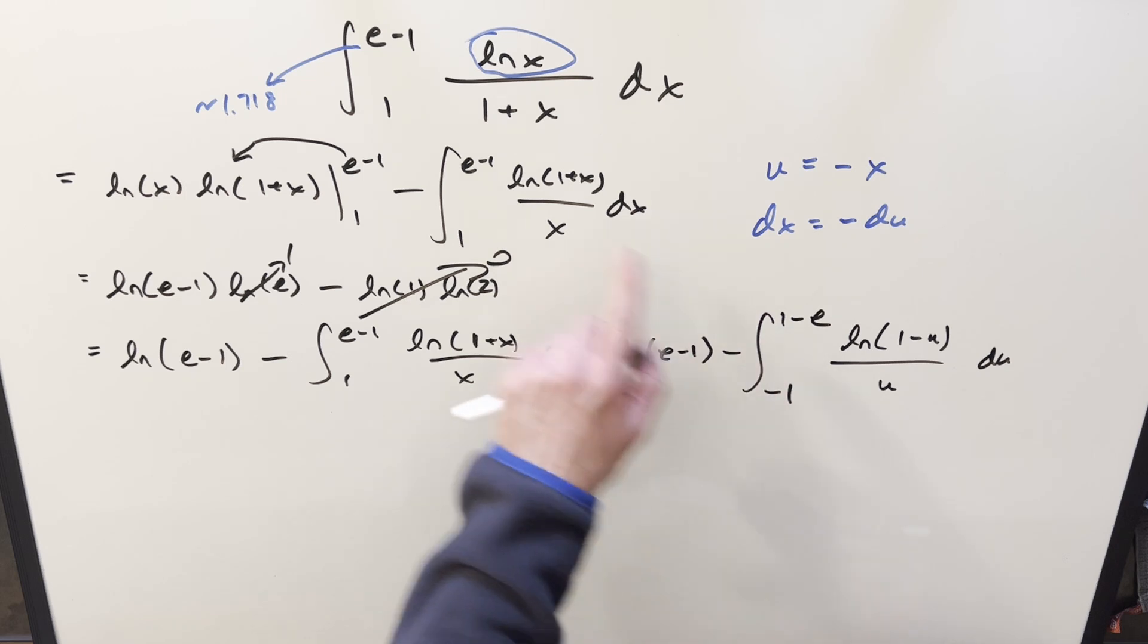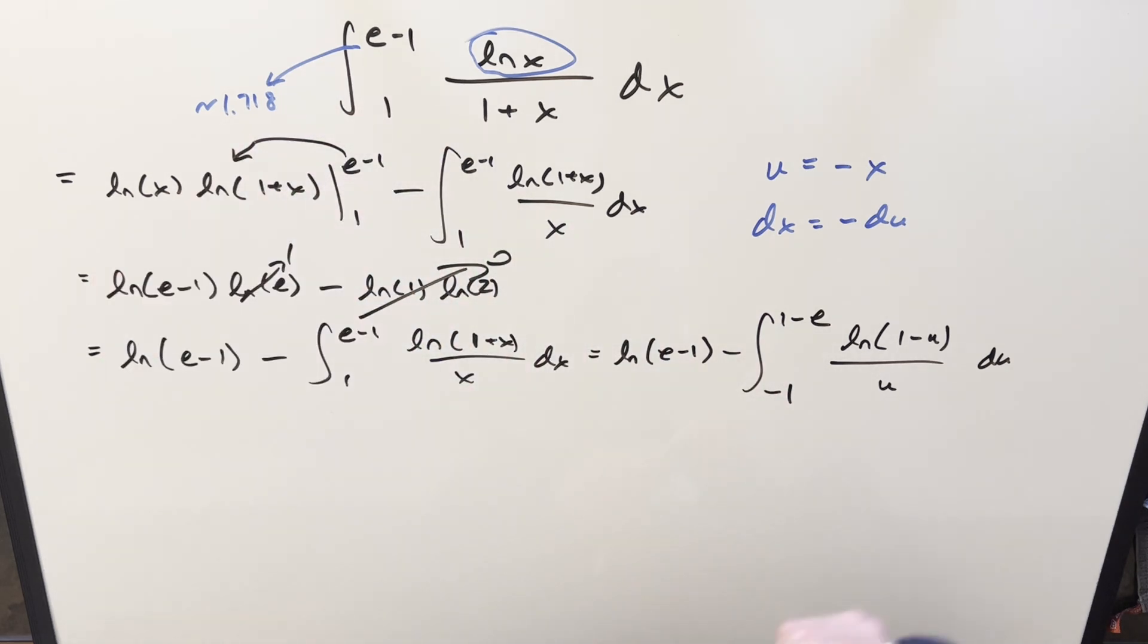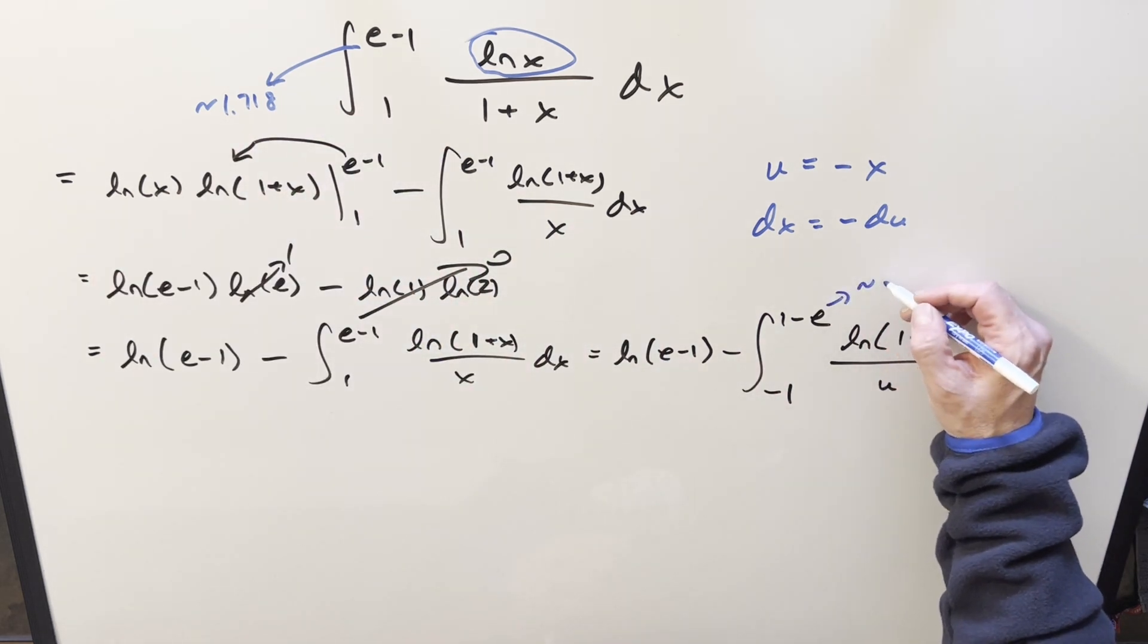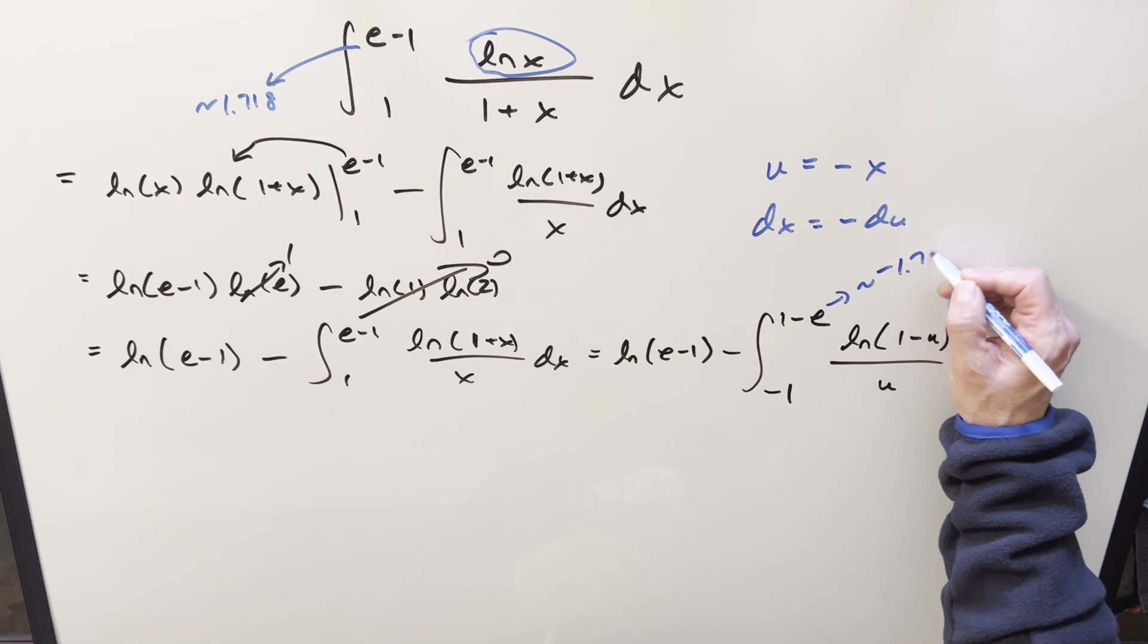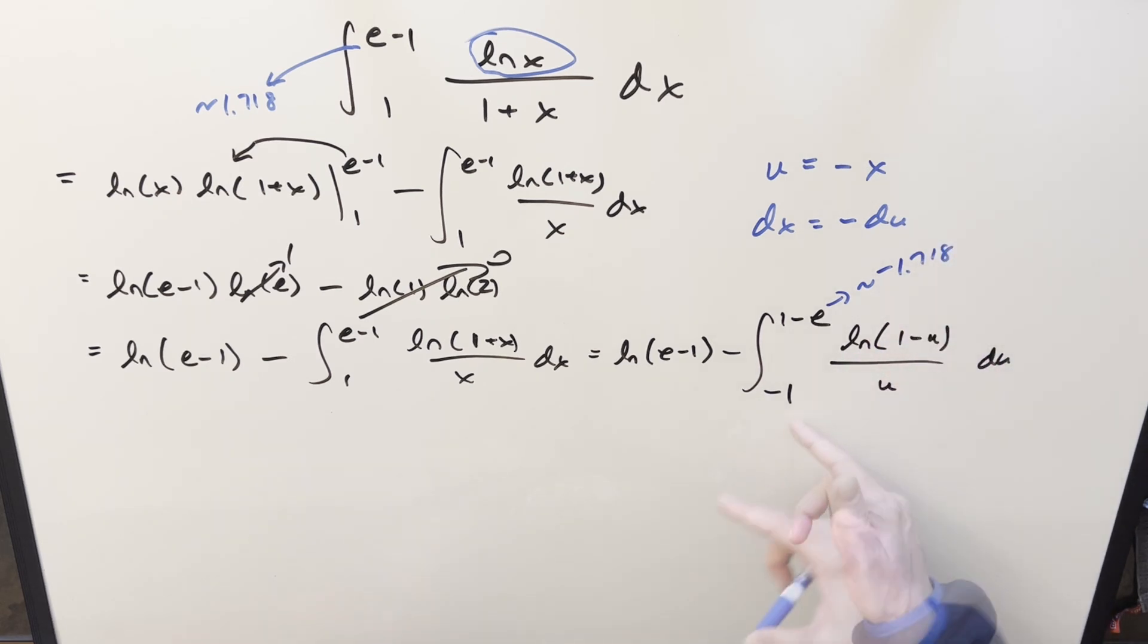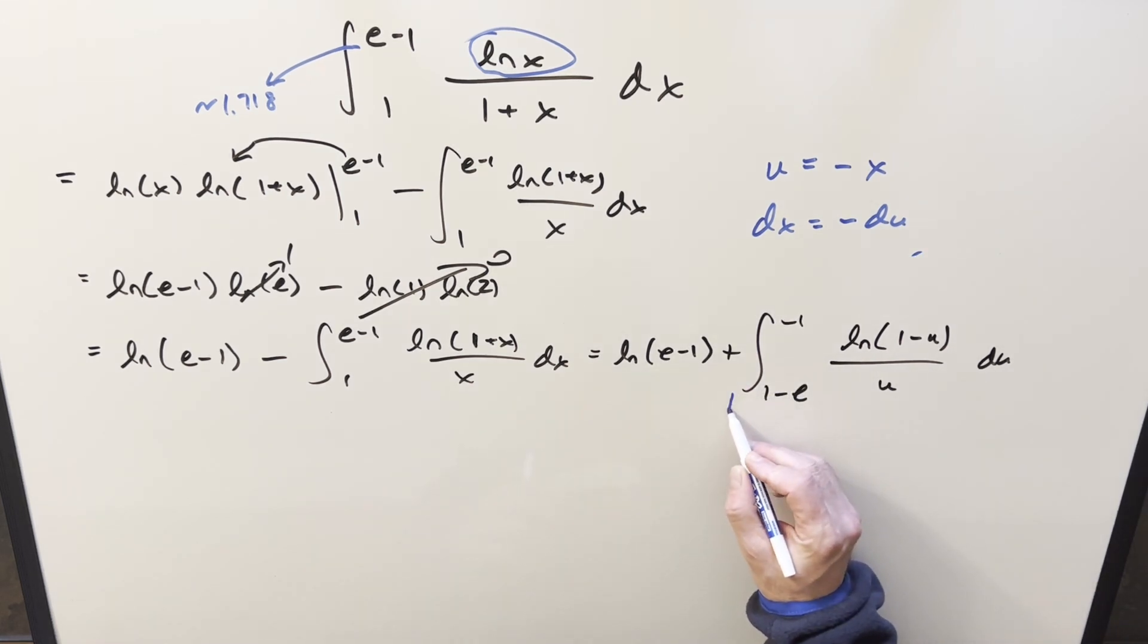And now for this other minus sign, if e minus 1 is 1.718, then this value is something like minus 1.718. But now minus 1 is greater than this. So what I'm going to do is just flip it. But then at this point, the thing we can notice is this right here, this is very similar to our definition for the dilogarithm.